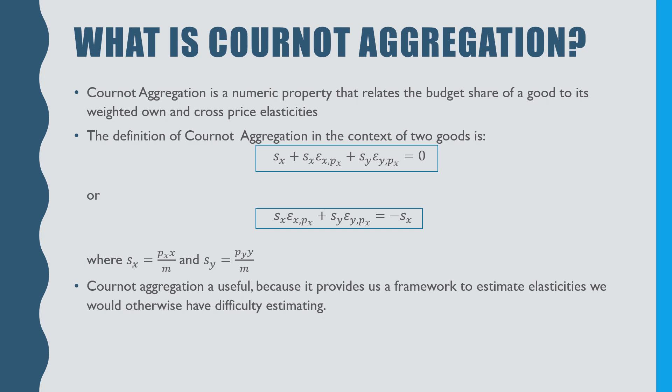So what is Cournot aggregation? Cournot aggregation is a numeric property that relates the budget share of a good to its weighted own and cross-price elasticities.